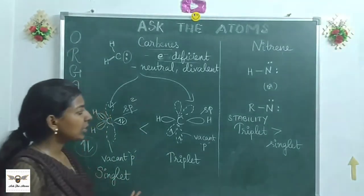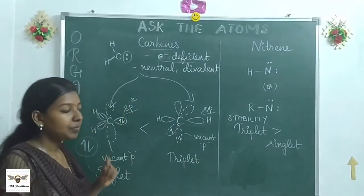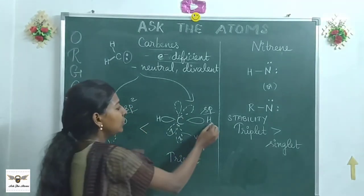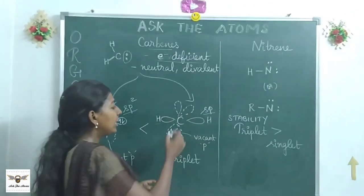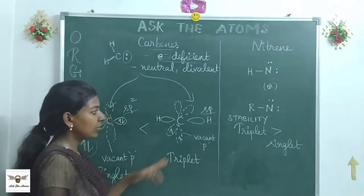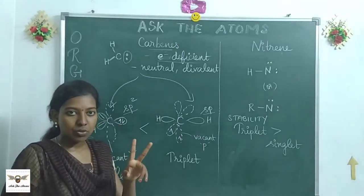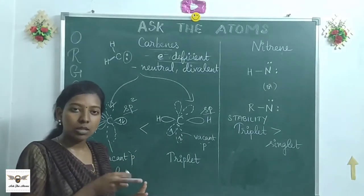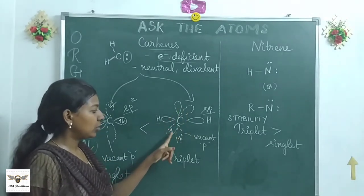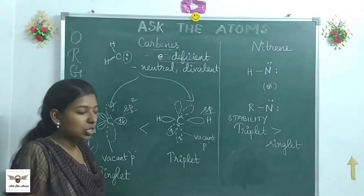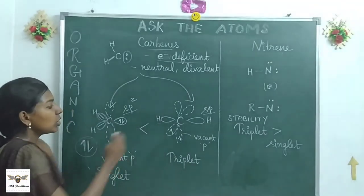In triplet carbene, the carbon has SP hybridization with two lobes used for valency. The two lone-pair electrons occupy two separate P orbitals (such as Px and Py) in an unpaired fashion — one electron in each orbital. This separated arrangement is called a triplet configuration. Triplet carbene is more stable than singlet carbene because the paired electrons in singlet carbene experience electron–electron repulsion, causing instability.